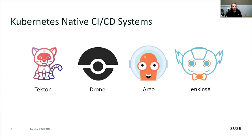Some of the more opinionated CI/CD integration points that are native to Kubernetes include tools like Tekton, Drone, Argo, and Jenkins X, which is extremely popular. All these platforms provide a much more native CI/CD pipeline that runs directly on Kubernetes. You don't have to guess about what other things might need to connect to it — like Jenkins and other external tools — because it has its own built-in orchestration and automation.